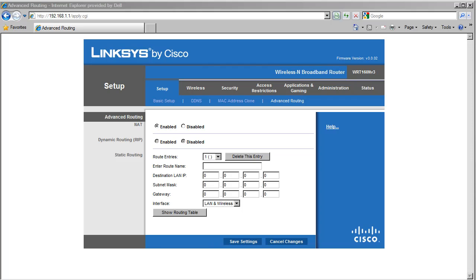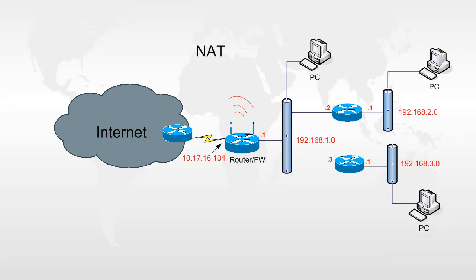Advanced Routing tab. Advanced routing may be used if multiple networks exist on the inside of the router. Let's take a look at an example. Here we have three networks on the inside: the 192.168.1.0 network, the 192.168.2.0 network, and the 192.168.3.0 network.